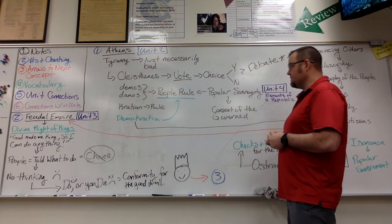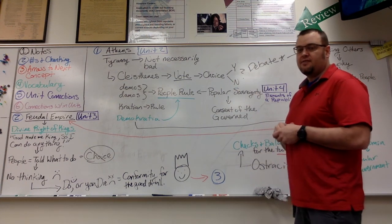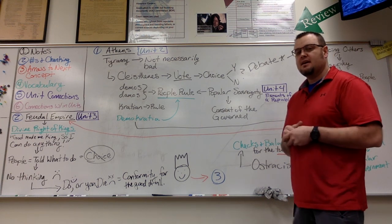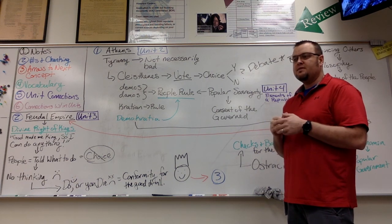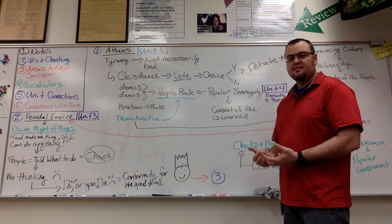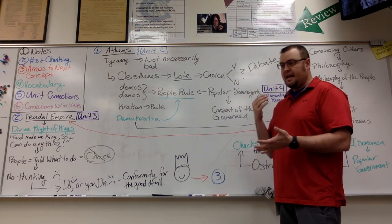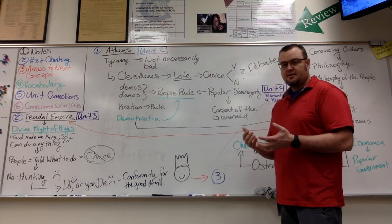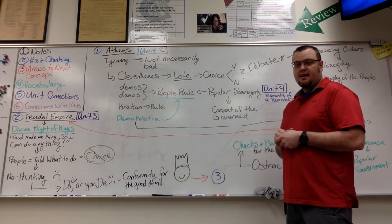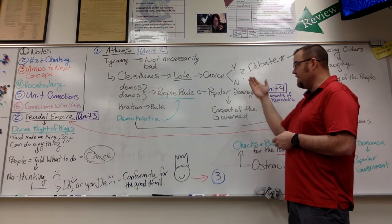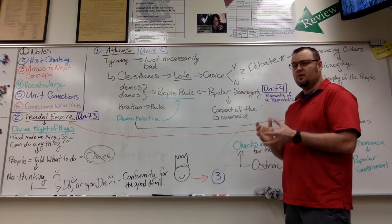When you vote, you have choice. You can say yes or no to many different issues and things we need to figure out as far as what government does for us. Remember from Unit 1, the reason we have organized government was to protect the surplus because we couldn't do anything else without surplus—we can't have social stratification, we can't have jobs other than farmer or hunter-gatherer without government. Now in Athens, we're saying the people should have a voice and some choice in their government and how government works for them.